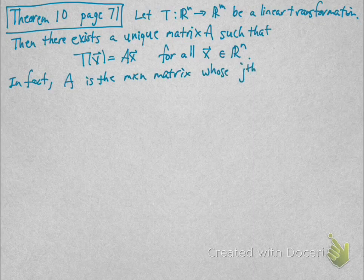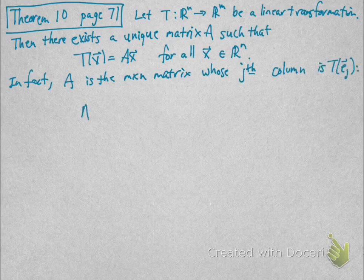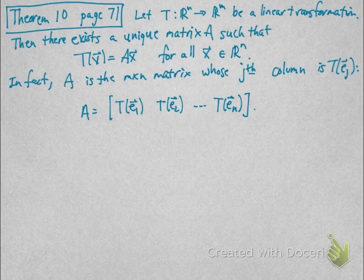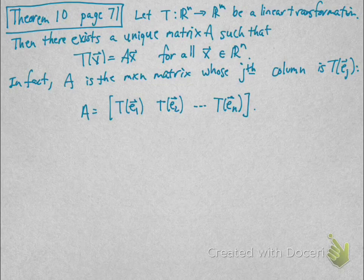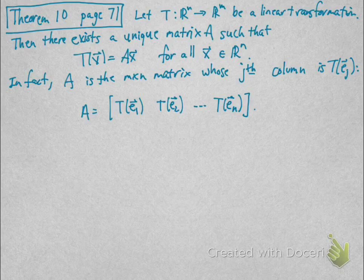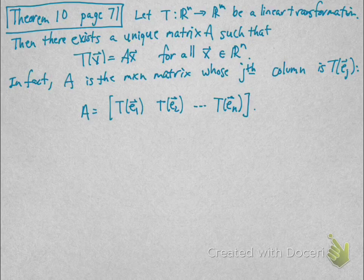In fact, you can say exactly what matrix A is. A is the m by n matrix whose jth column is T(E_j). Remember, E_j is the vector of all zeros with a 1 in the jth slot. So matrix A has first column T(E_1), second column T(E_2), and so on until the last column T(E_n).